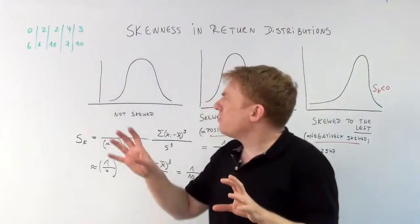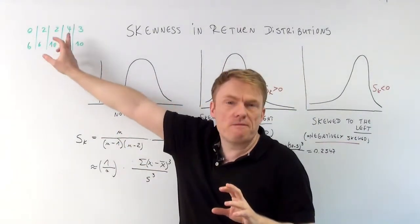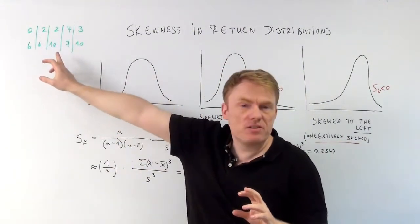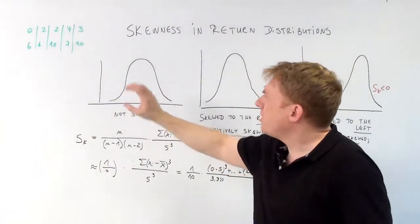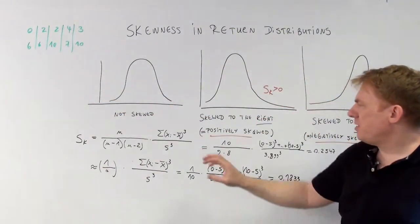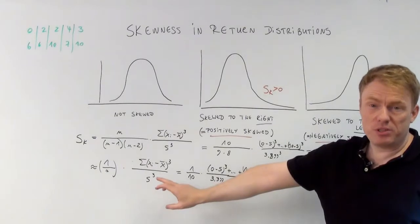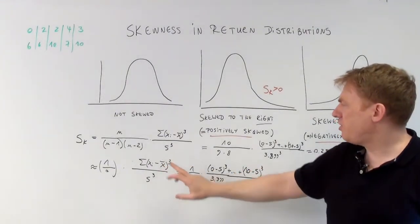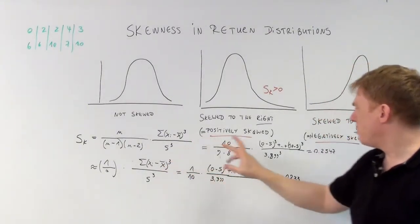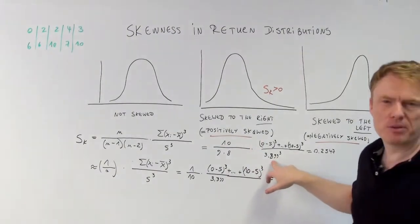Now if we have those numbers 0, 2, 2, 4, 3, 6, 6, 10, 7, 10, we can compute the standard deviation as we did in other videos. The standard deviation is 3.399.